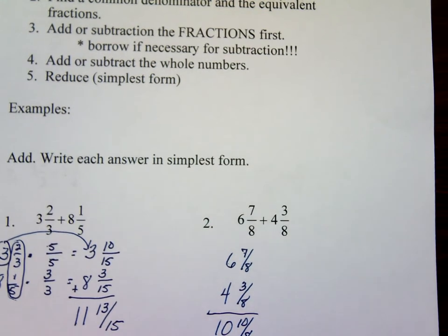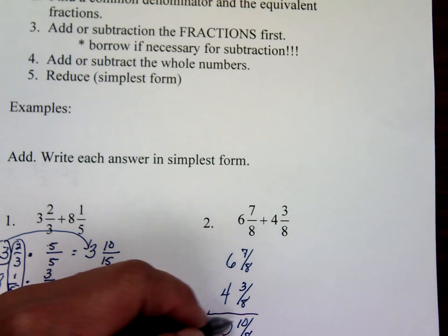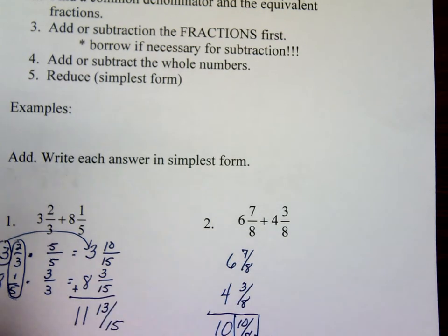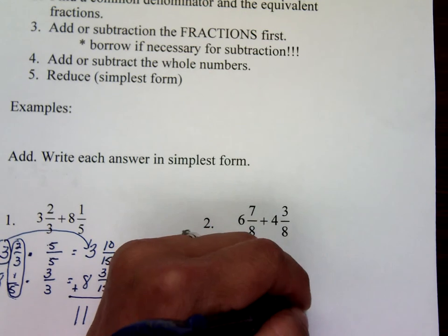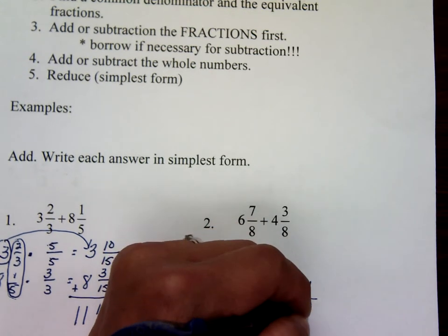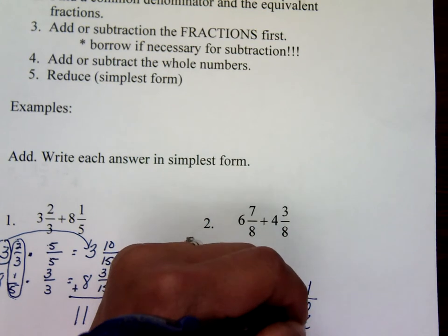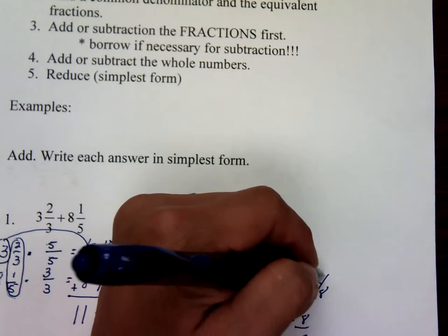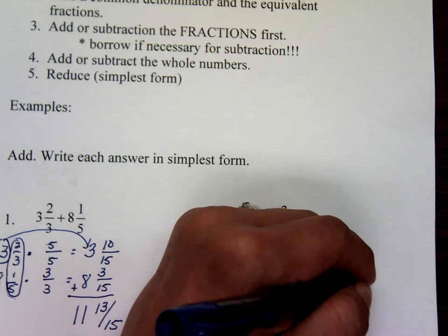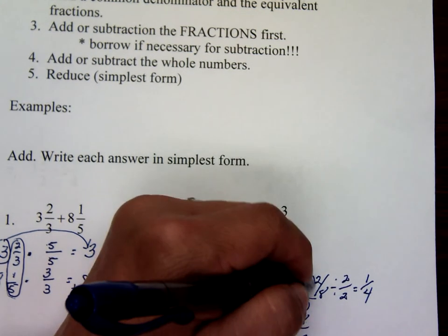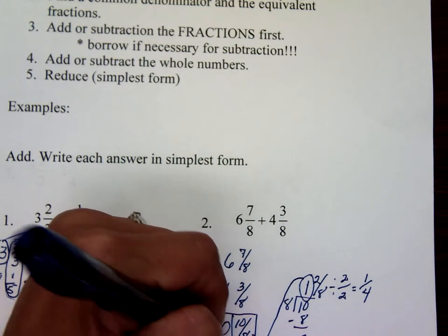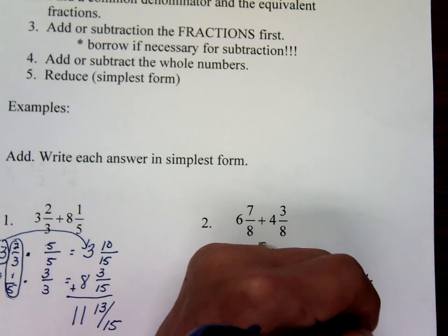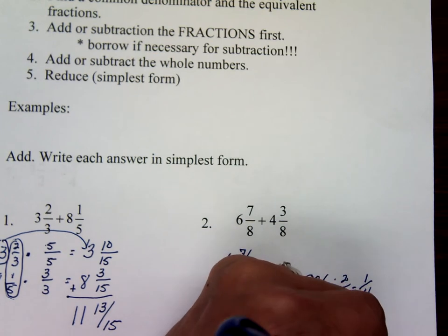But here's the problem — you cannot have an improper fraction with a whole number. You have to convert this into a mixed number. To convert, you divide: ten is inside, eight is outside. Eight goes into ten once. Multiply and subtract: ten minus eight is two. You get one and two-eighths. Well, two-eighths can be reduced — divide top and bottom by two and you get one-fourth. But this whole number one has to be added to the ten, so it's ten plus one and one-fourth, giving you the answer of eleven and one-fourth.